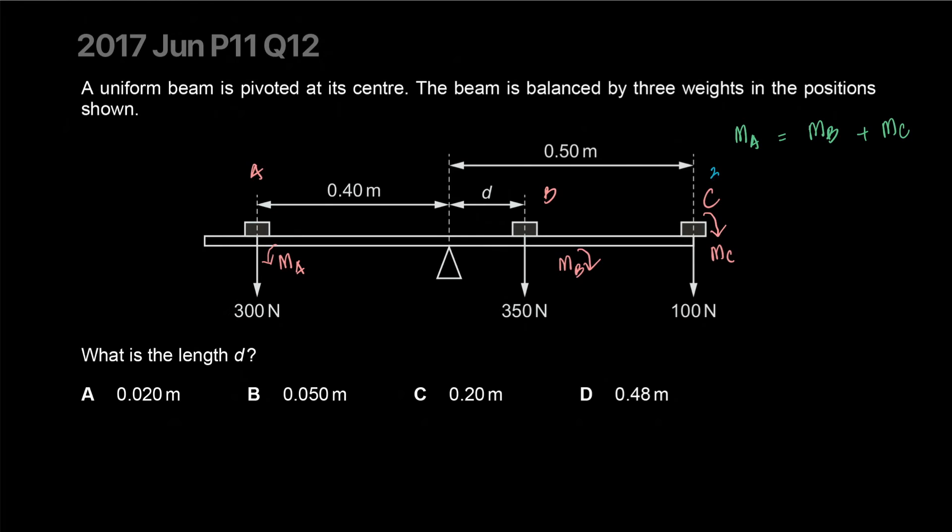You have moment A caused by a force that is 300 times the distance which is 0.4 meters away. Moment B is caused by an unknown force and oh sorry it's not an unknown force. My bad. It's 350 newtons at an unknown position D. And moment C is caused by a hundred newtons which is at 0.5 meters away. Half a meter away. Balance it out. 300 times 4. I need the aid of this space deck.